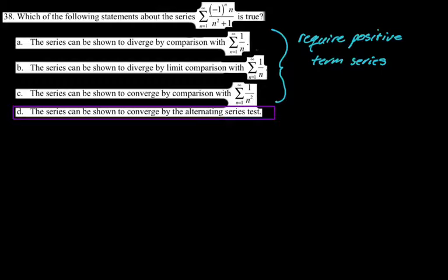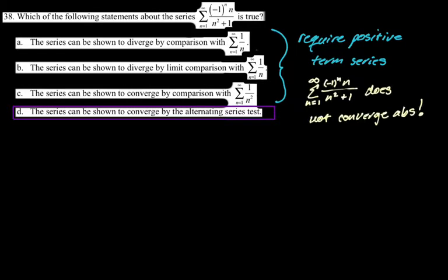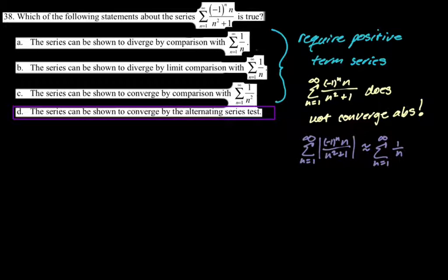These first three options just require positive term series. This thing does not converge absolutely — it's basically 1/n when you take the absolute value. For the alternating series test: the terms alternate, they decrease in magnitude, and the limit is zero. So it converges by the alternating series test.